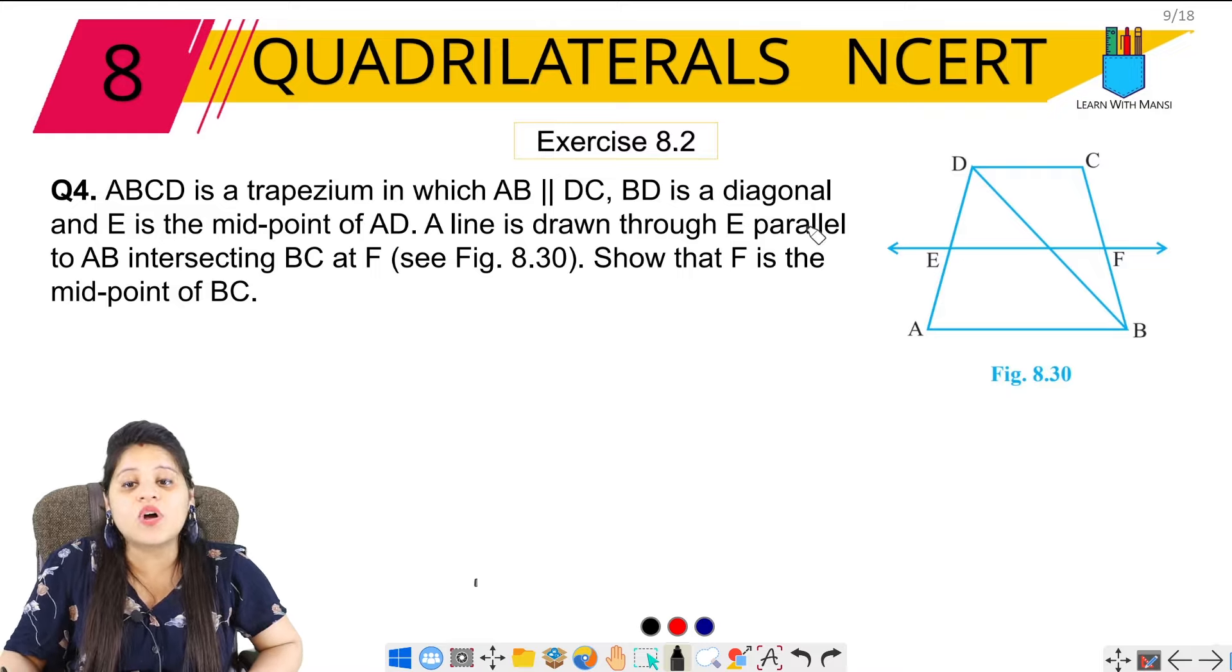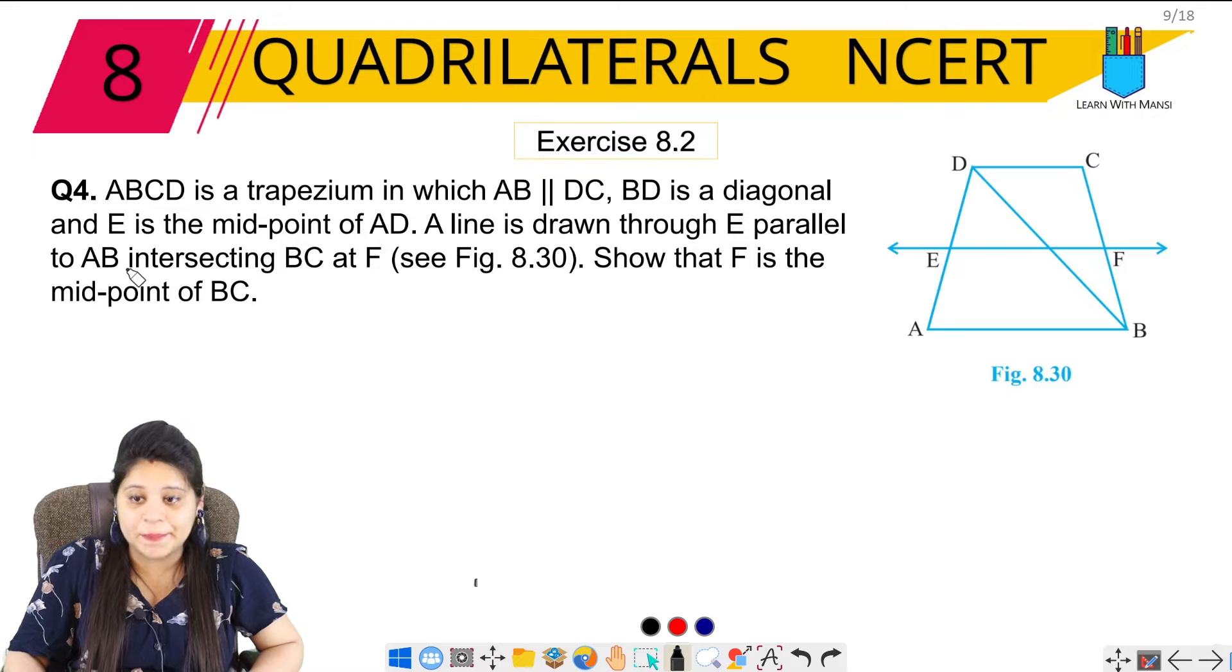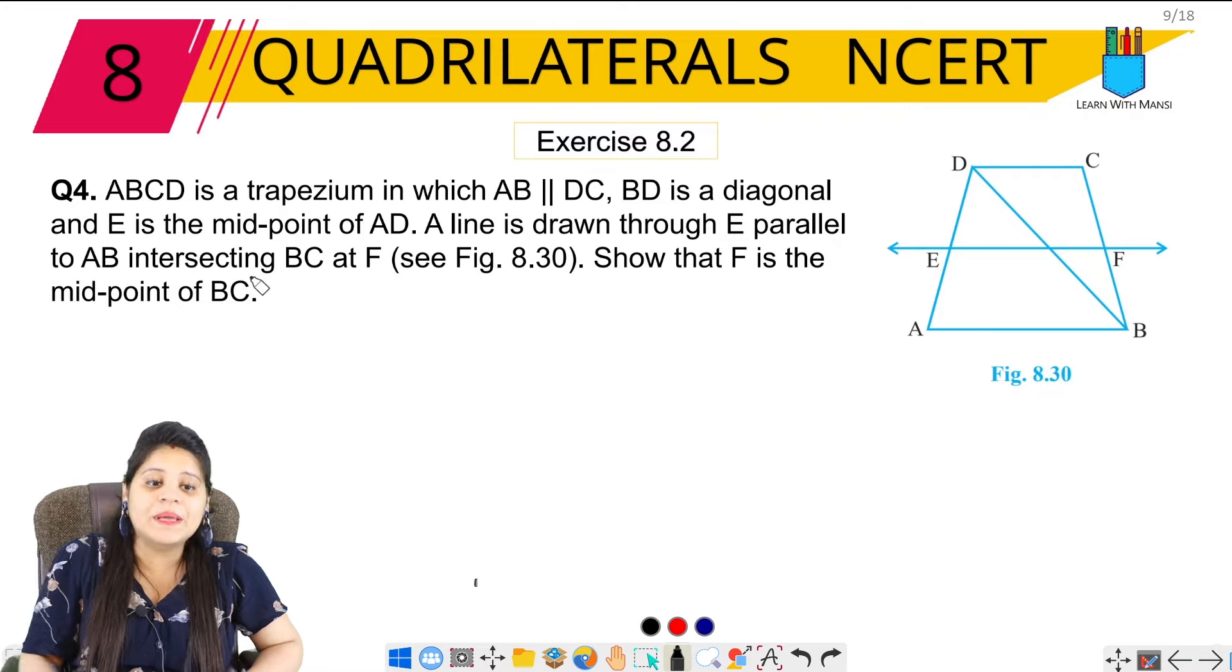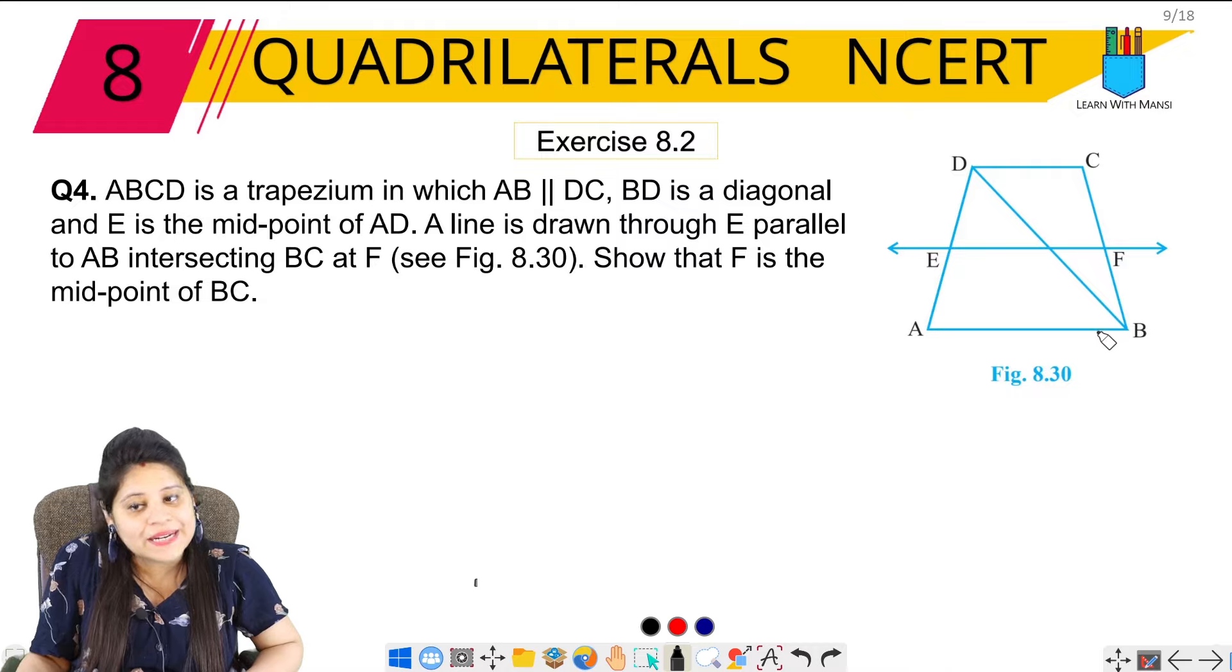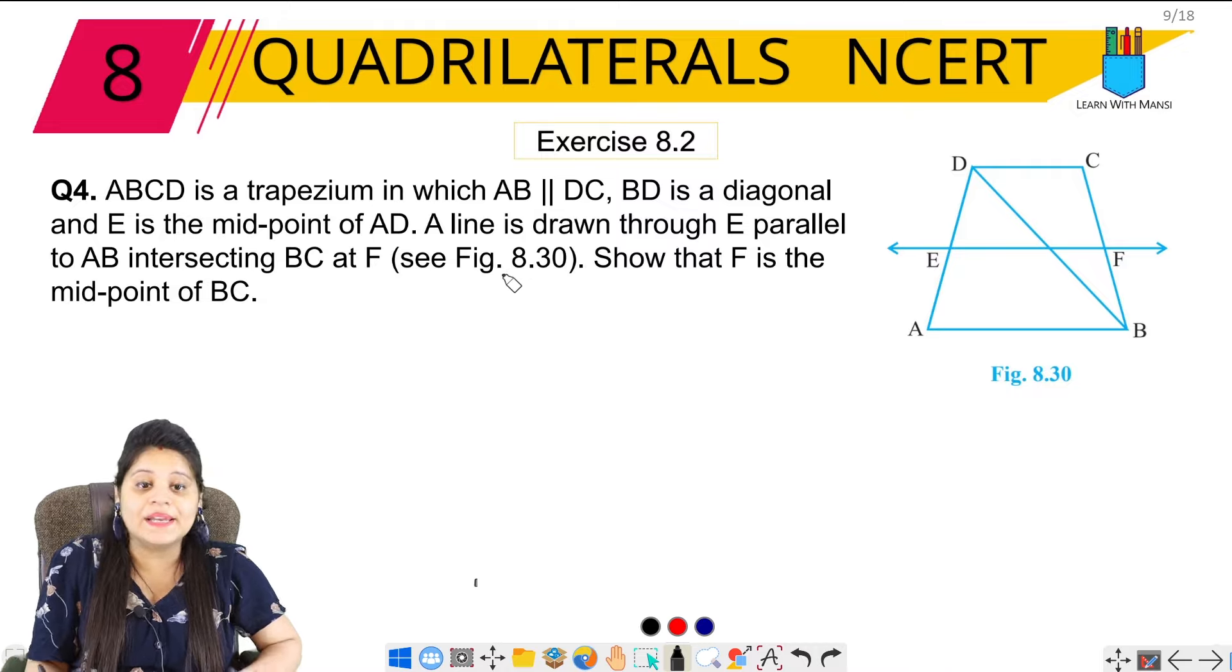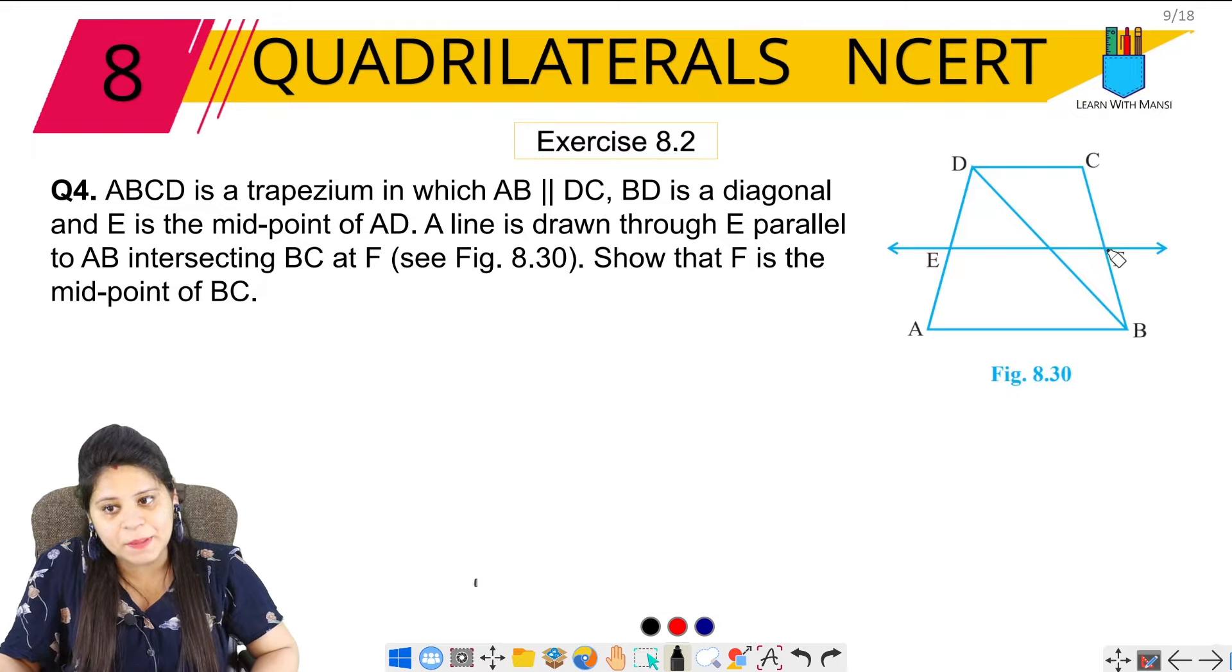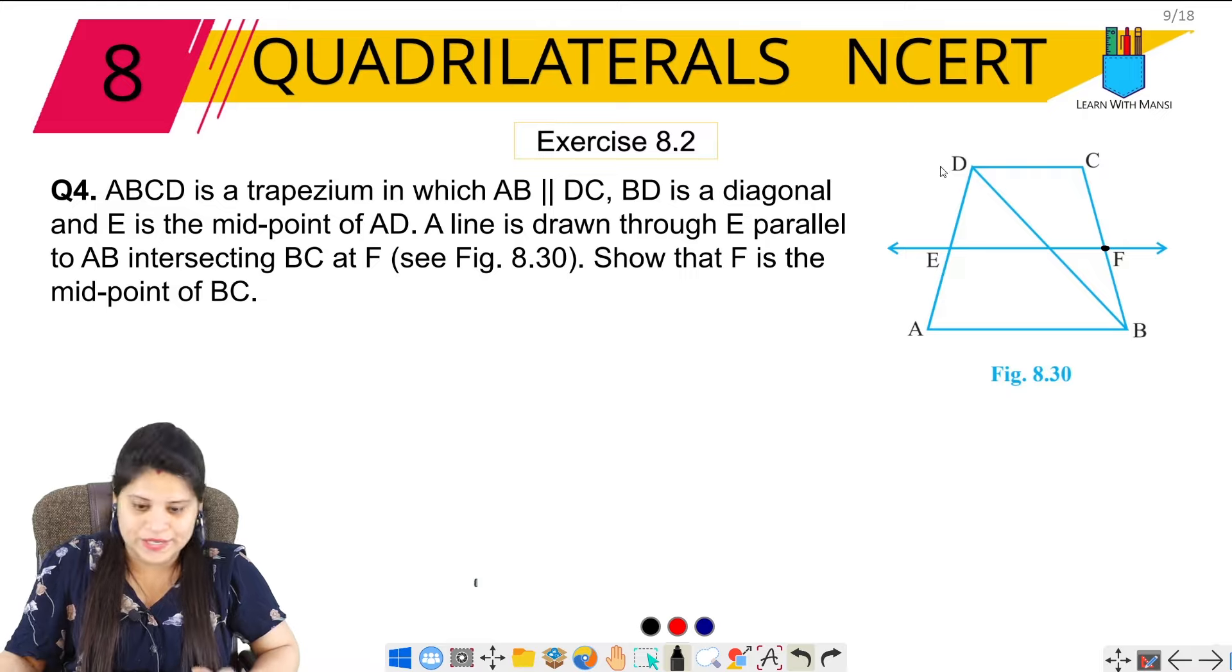A line is drawn through E parallel to AB. Now E has made a line which is parallel to AB and intersects BC at F. So this EF is parallel to AB. Now show that F is the midpoint of BC. We have to prove that F is the midpoint of BC. So let's start.